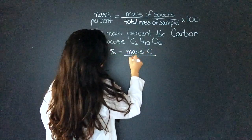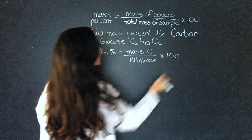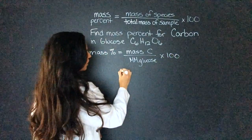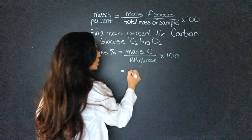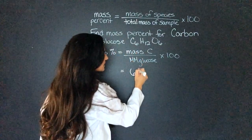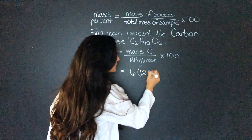divided by the molar mass of glucose times 100. The mass of carbon: there are six carbon atoms in one molecule of glucose, so we have to do six times the molar mass of carbon, which is 12.01, and divide that by